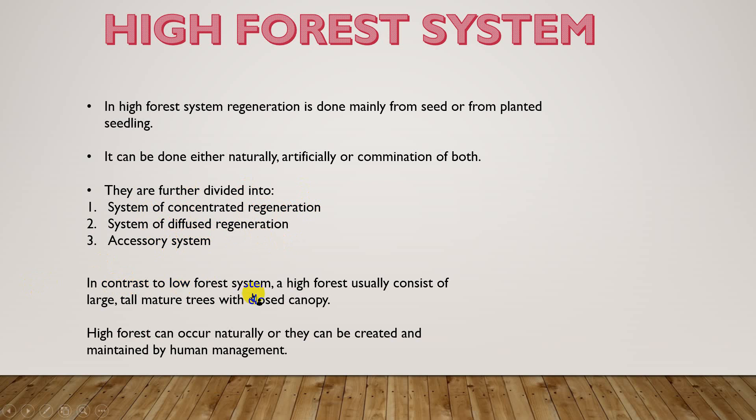In contrast to the low forest system, a high forest system usually consists of large, tall, mature trees with a closed canopy. Low forest systems can occur naturally or can be created and maintained by human management. High forest systems similarly may occur naturally or require skilled manpower and active management.